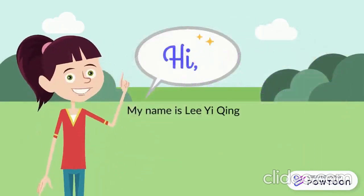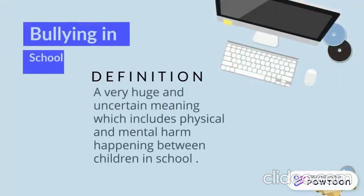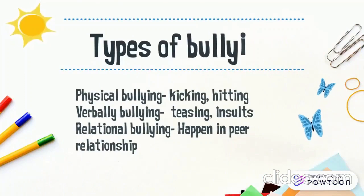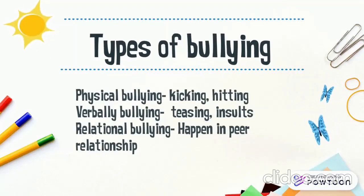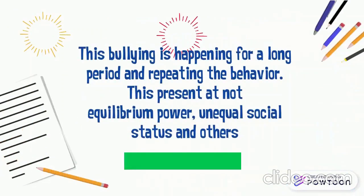Hi, my name is I Ching. Today I would like to talk about bullying in school. The definition encompasses a very broad and uncertain meaning, which includes physical and mental harm happening between children in school, as well as verbal bullying, teasing, insults, and relational bullying that happens in peer relationships. This bullying occurs over a long period and involves repeating behaviour.